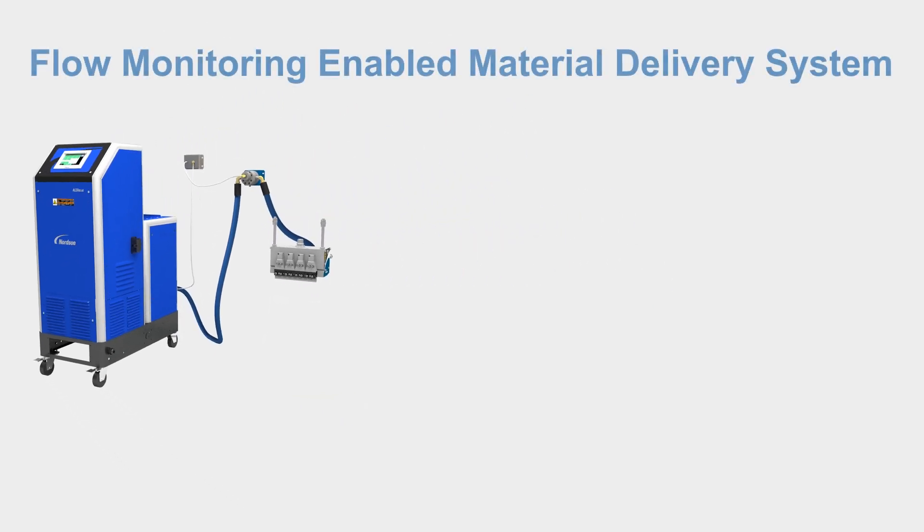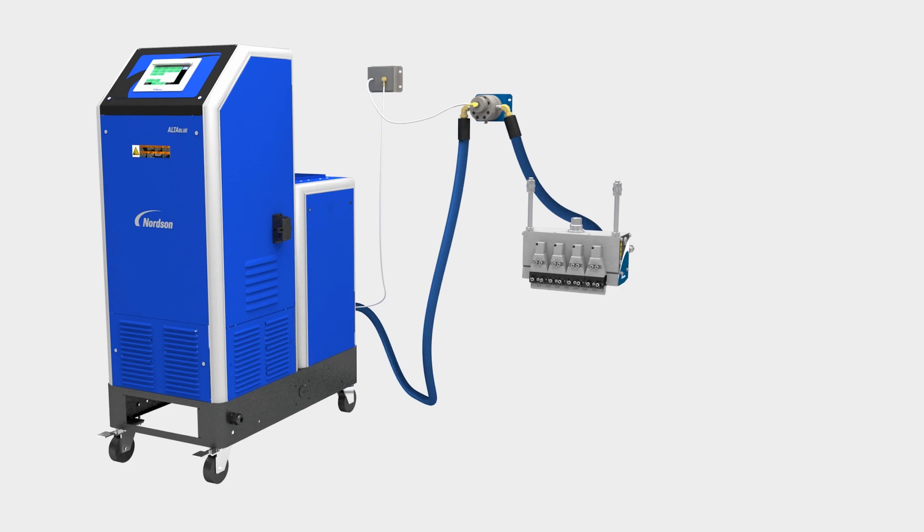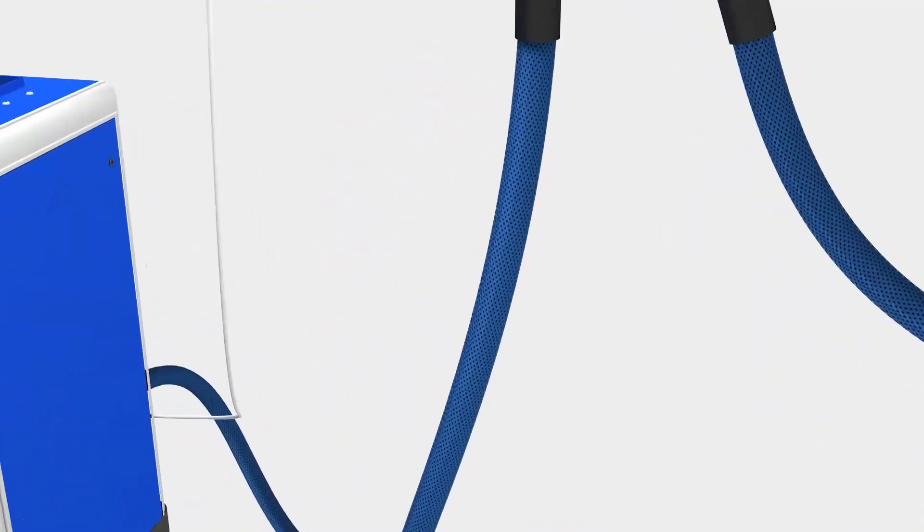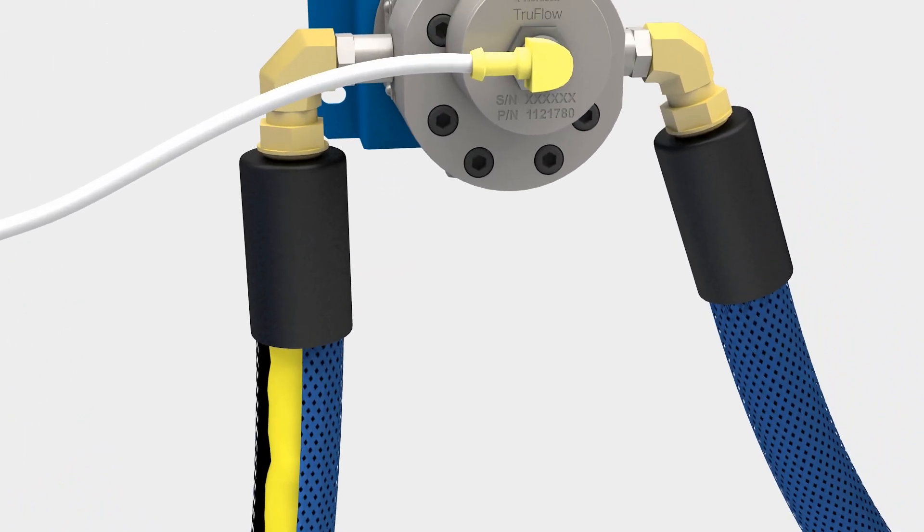The first step in variation management involves measurement of actual material flow. A simple, cost-effective solution is installation of Nordson's TrueFlow meter between the melter and applicator. This allows actual flow rate data to be captured for analysis to identify the extent of material delivery variation.